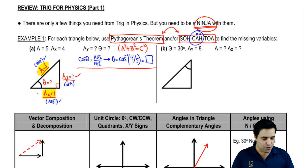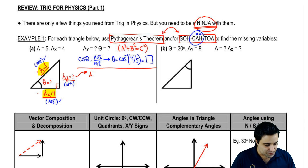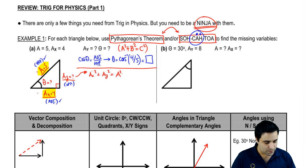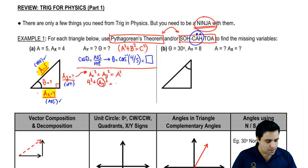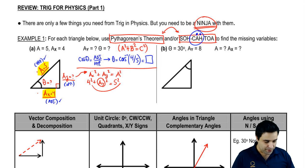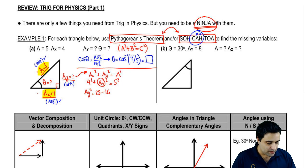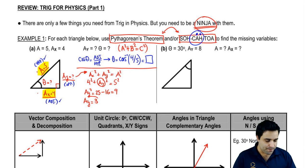I want to find AY first using the Pythagorean theorem — that's the easiest way and probably what you should do. A squared plus B squared equals C squared, so AX squared plus AY squared equals the whole vector squared. Plugging in: 4 squared plus AY squared equals 5 squared. Moving the 4 squared over: AY squared equals 25 minus 16, which is 9. So AY is the square root of 9, which is 3.